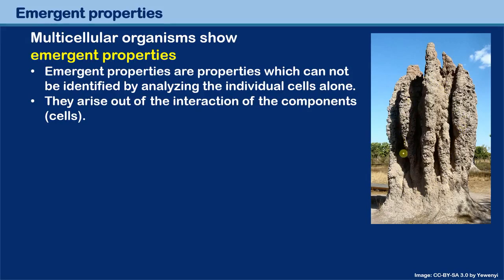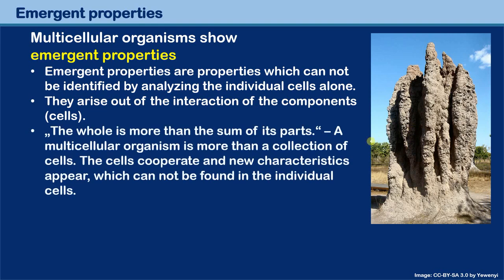Now the question is: when I analyze an individual termite, where can I find the building plan for this termite colony? As a matter of fact, you cannot find it anywhere, because the building plan arises out of the interaction of the components — of the cells in a multicellular organism, or in the case of a termite colony, in the termites themselves. By working together, they are able to create something which cannot be found in the individual termites alone.